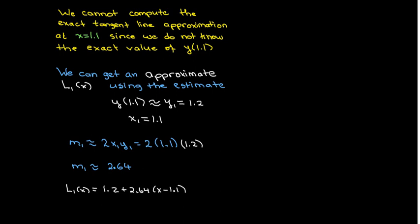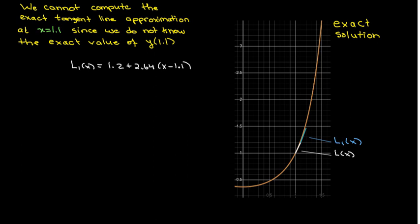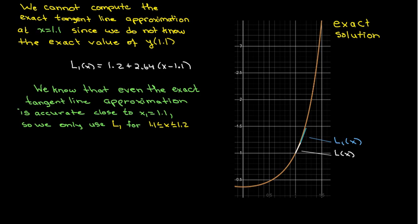So we can go ahead and calculate our slope. Our slope remember is just y prime which is 2xy. So I'll calculate that. And now I've got my equation for a second line segment where I'm going from x equals 1.1 to x equals 1.2. And then when I get to x equals 1.2 I'll have y of 1.2. I'll have an approximation for y at 1.2.